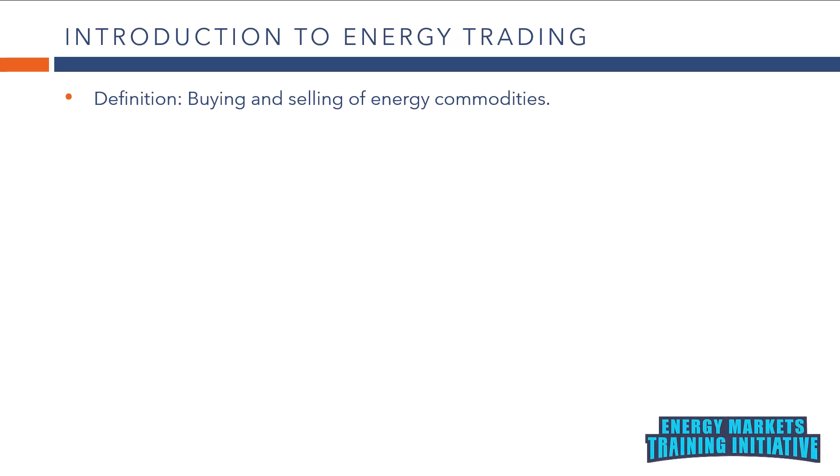Energy trading involves the buying and selling of energy commodities, such as electricity, natural gas, crude oil, and refined products, on various markets. These markets can be physical, where actual delivery of the commodity occurs, or financial, where contracts are settled in cash without physical delivery.